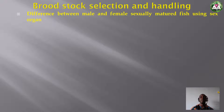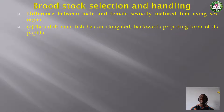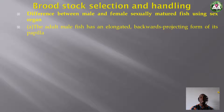How do you differentiate between a male fish and a female fish using their sex organs? The best and simplest way is to look at their genital papilla. The adult male fish has an elongated, backward-projecting genital papilla — its reproductive organ is elongated and projects backward.